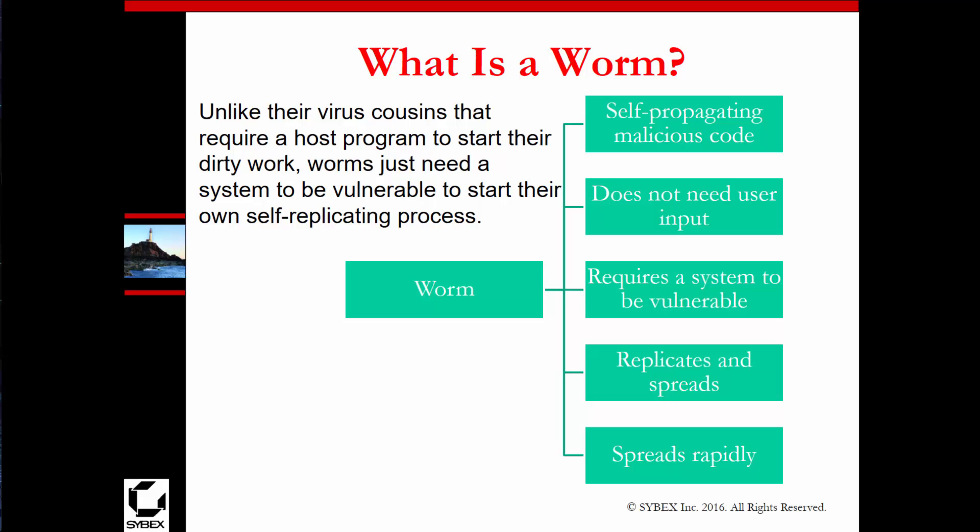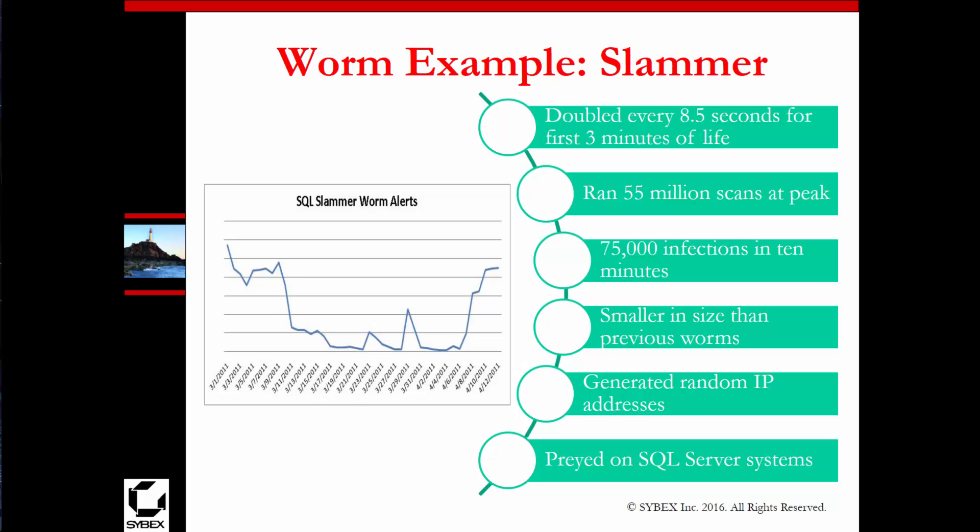What's a worm? A worm is self-propagating, doesn't need any type of user input, but does require a system to be vulnerable to the specific code it's exploiting. It replicates and spreads very rapidly. A worm example is Slammer — it doubled every eight and a half seconds for the first three minutes of its life. At its peak, it ran 55 million scans and infected tens of thousands within minutes. It generated random IP addresses and preyed on SQL server systems.